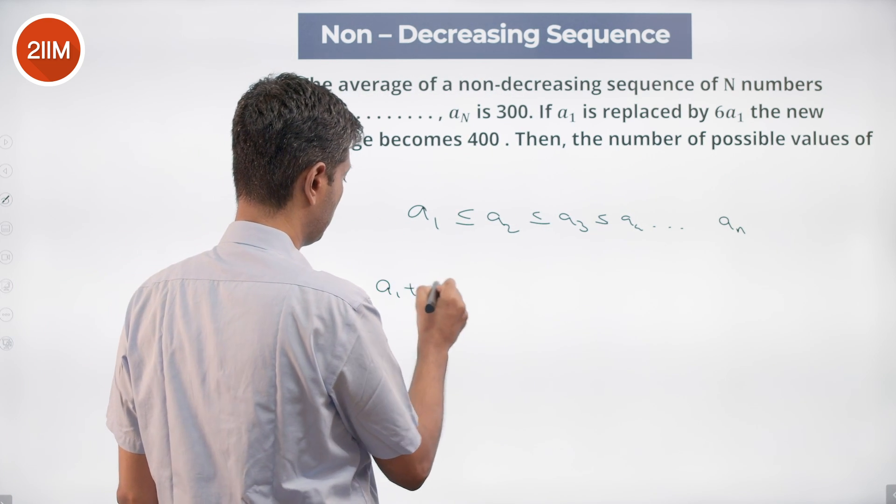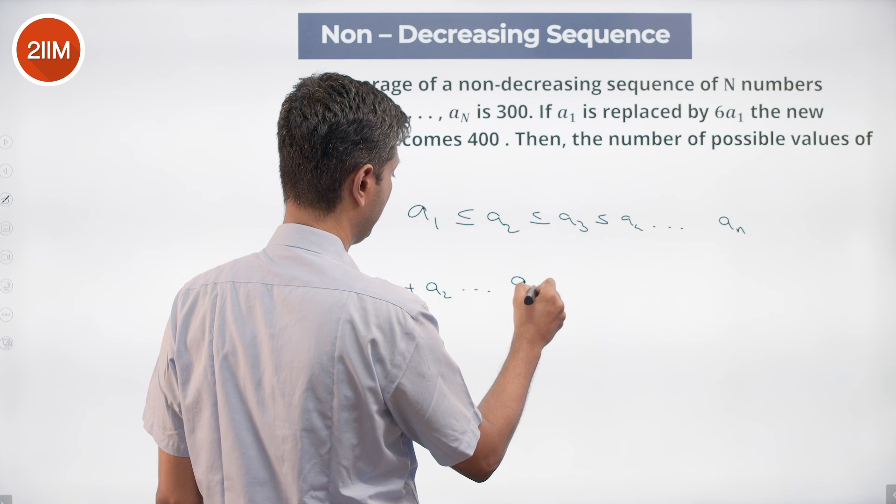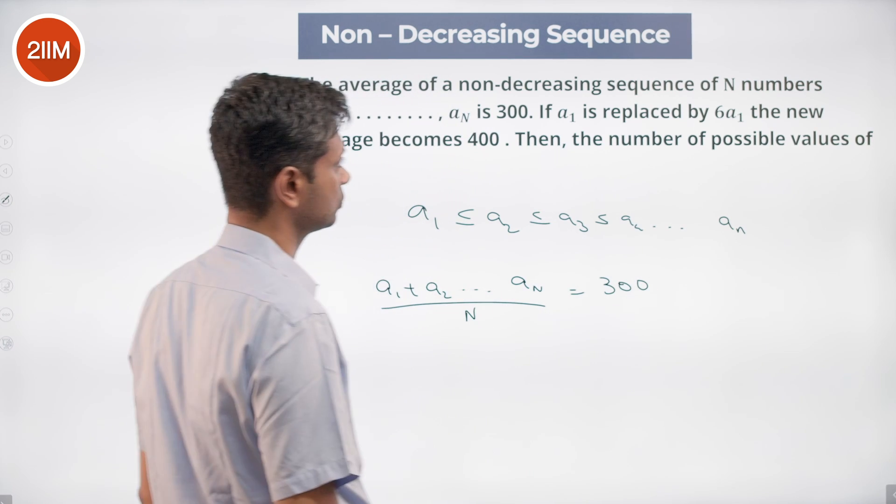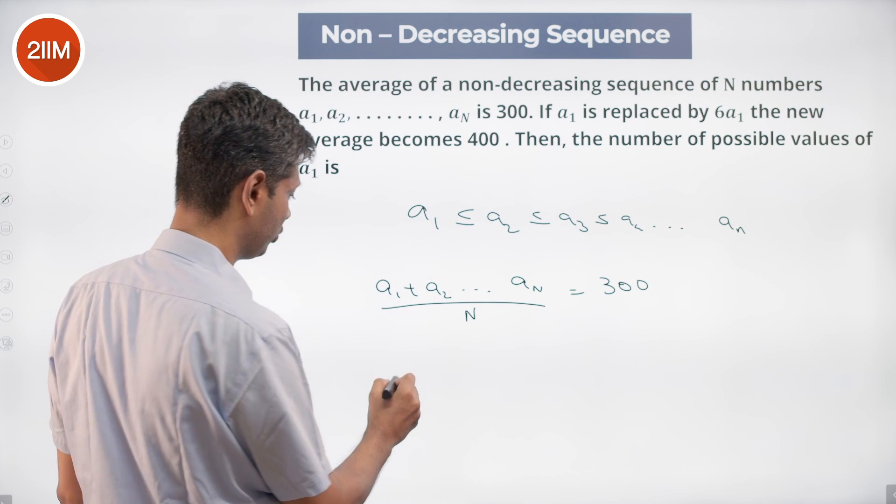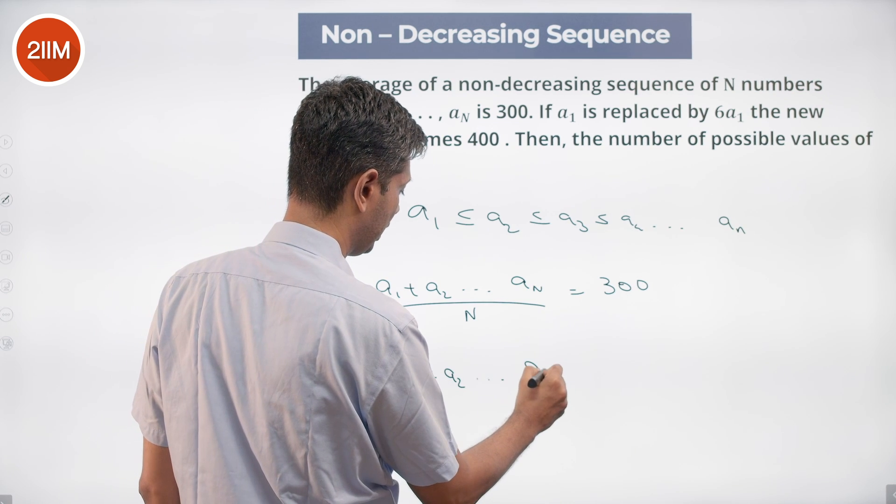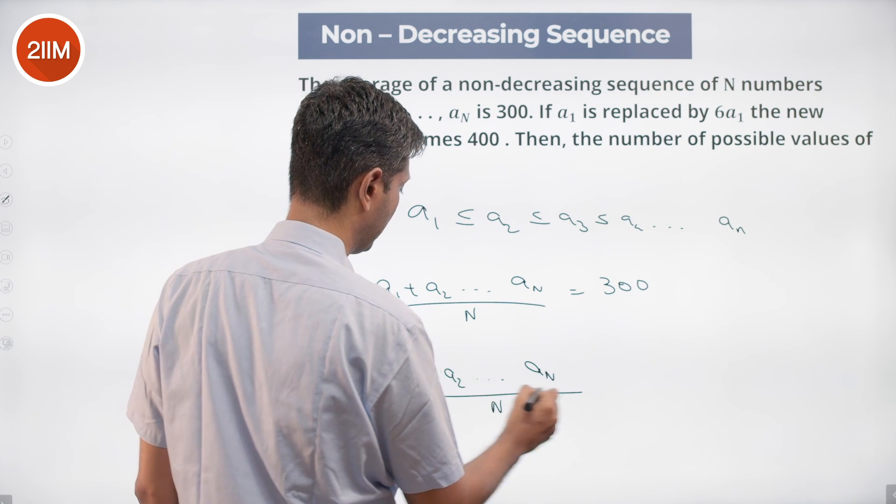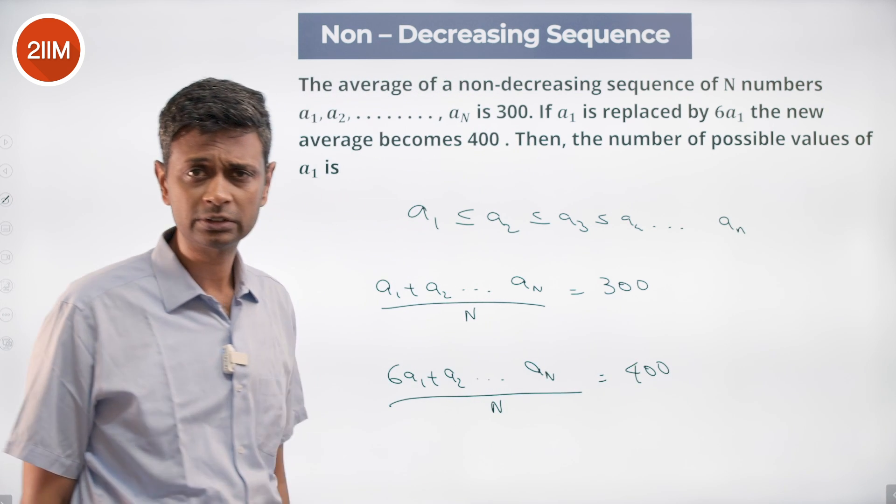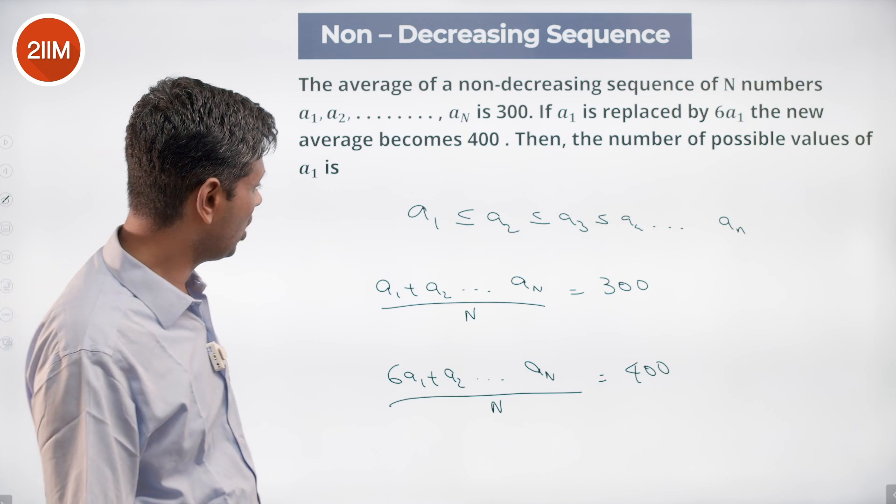We know that (a₁ + a₂ + ... + aₙ) / N = 300. a₁ is replaced by 6a₁, so (6a₁ + a₂ + ... + aₙ) / N, the average will be higher. The average is 400.